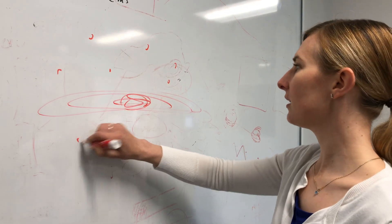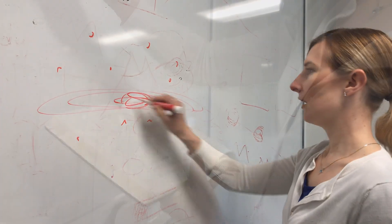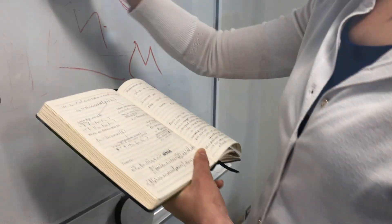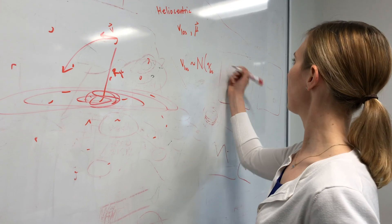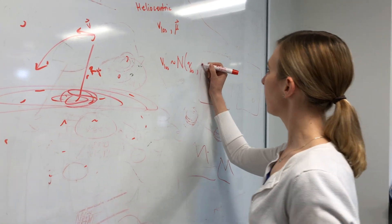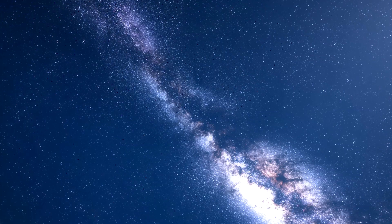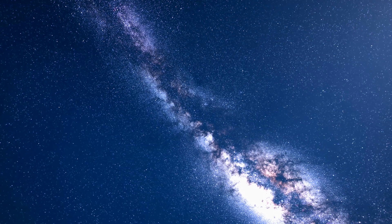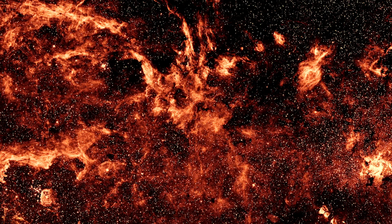I'm interested in the mass of the Milky Way because we want to know how much dark matter is in the Milky Way. We want to answer fundamental questions about where we came from — how was the Milky Way formed, how did it form stars, how did those stars come to be, and why did our particular place allow life to form?